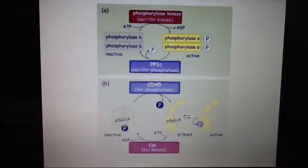And in this case, the protein phosphatase is acting as an activator, which is the exception. So CD45 is a receptor-like tyrosine protein phosphatase which primes P56 LCK for activation. Now you can see that it is primed when the phosphate is taken away, which is opposite to what usually happens.